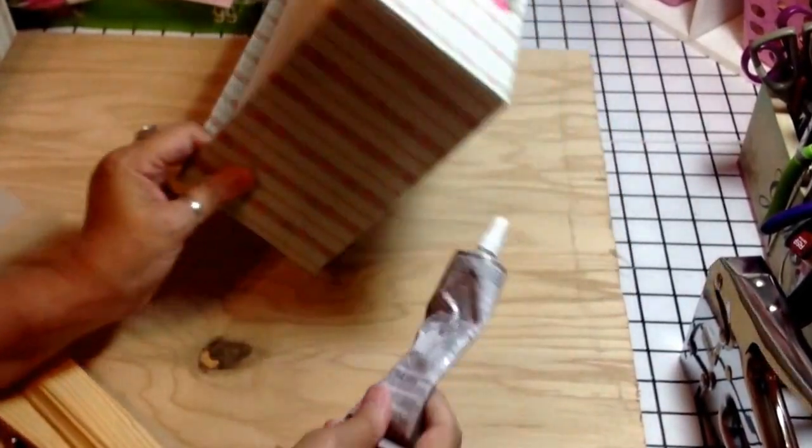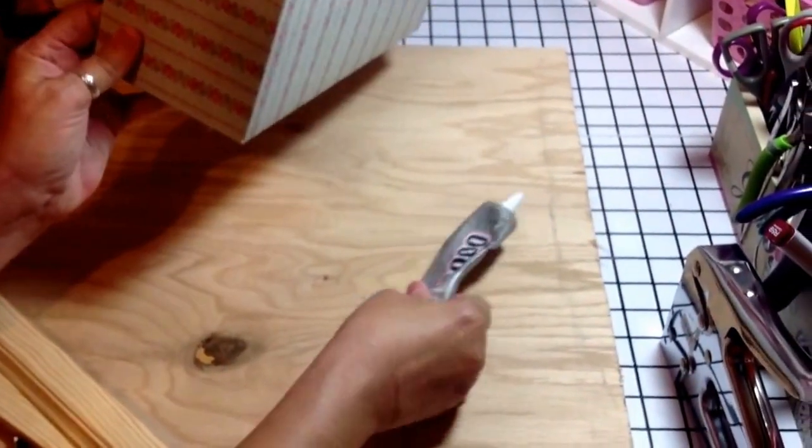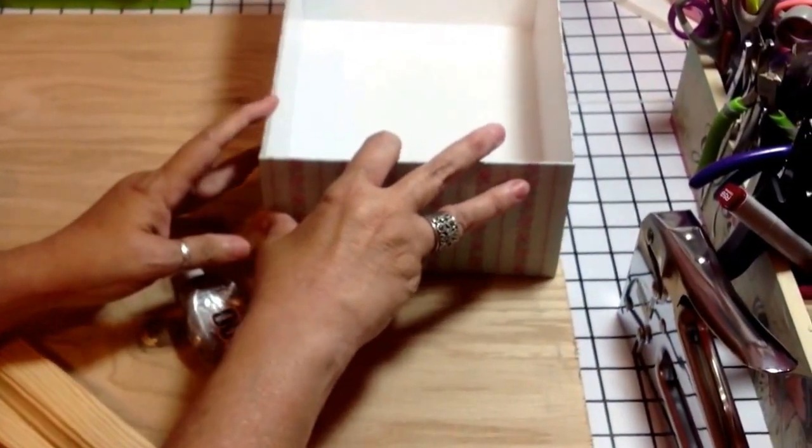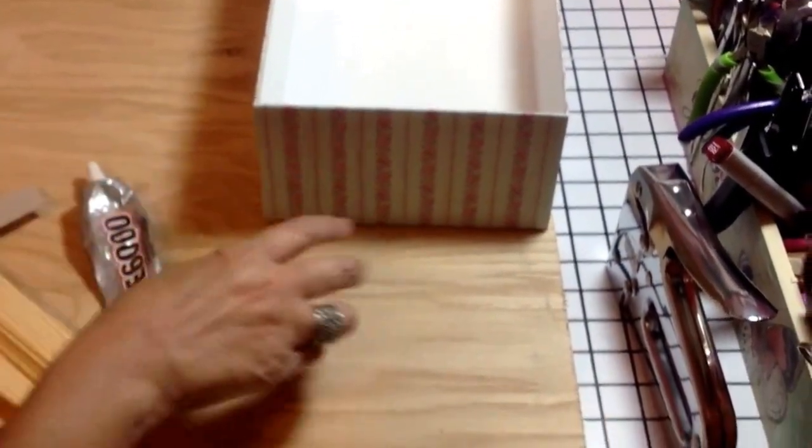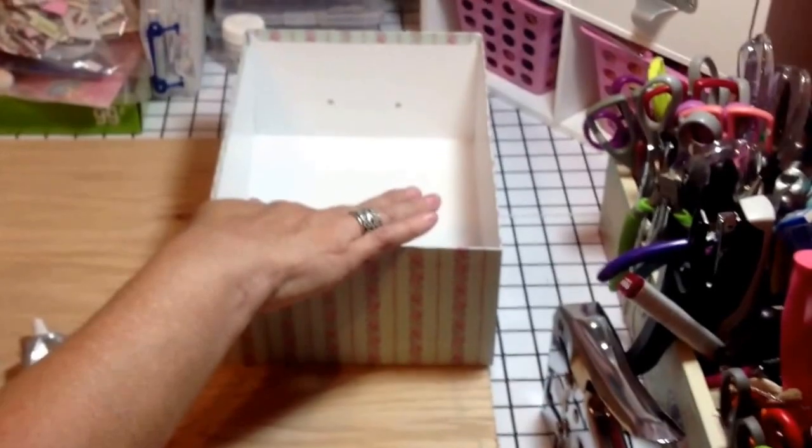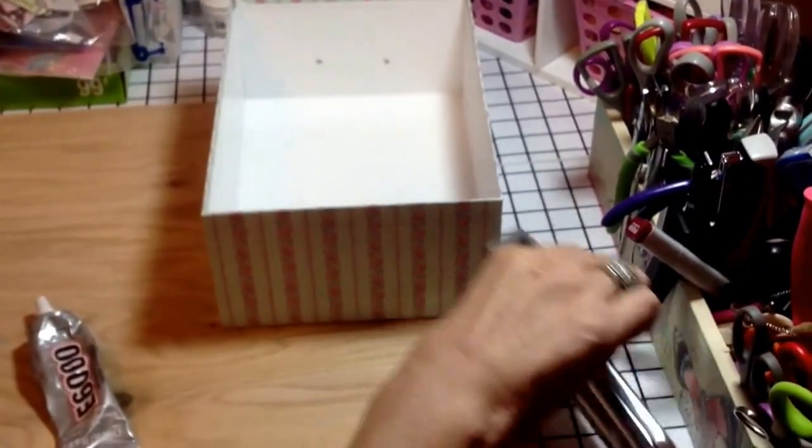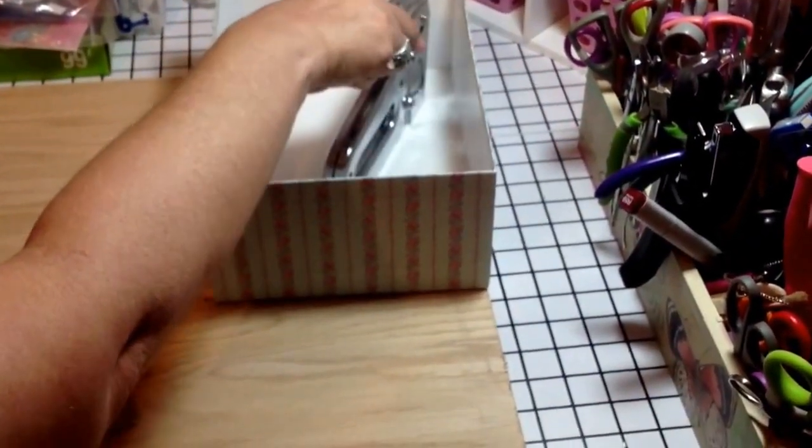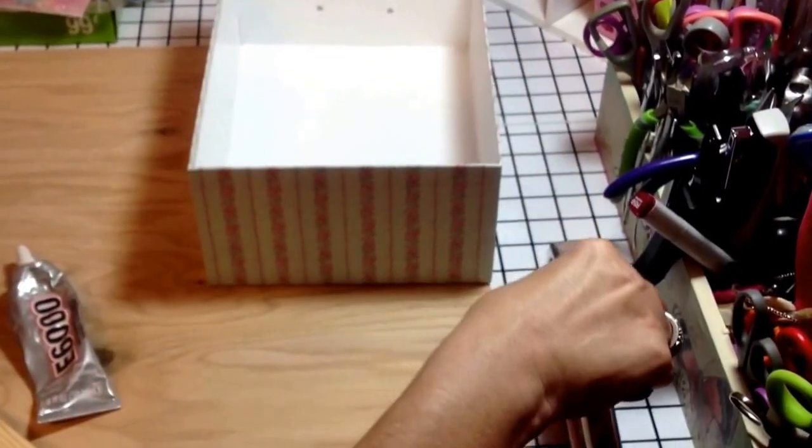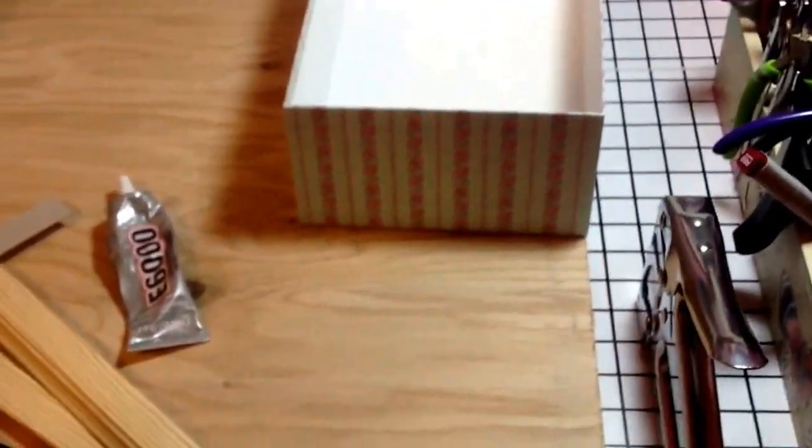Then you're going to place your boxes and staple them. You want to put five, two in the corners, one in the middle. Then you're going to come in with your paper that you pre-cut, whatever paper you choose to use.